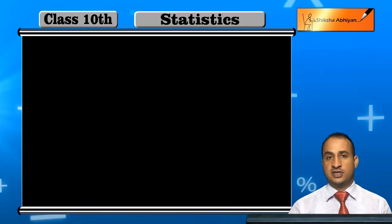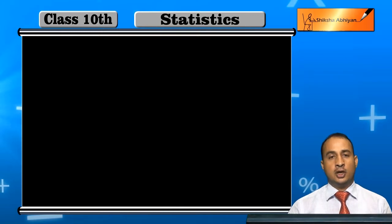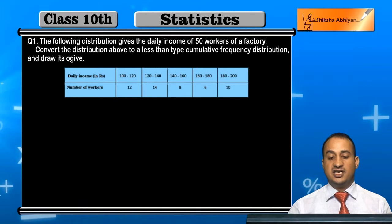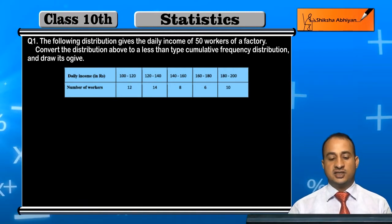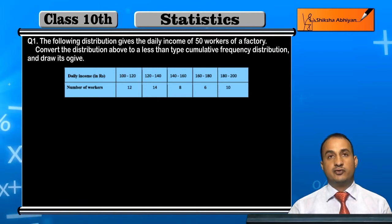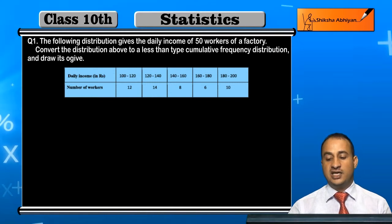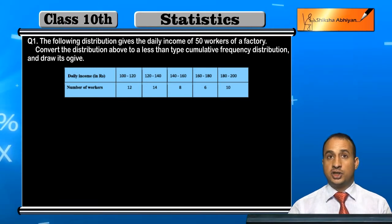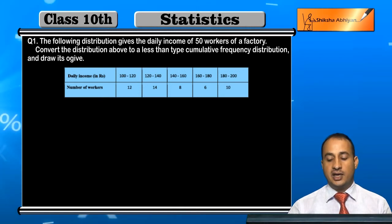The questions are about less than ogives. The first question is: the following distribution gives the daily income of 50 workers of a factory. The daily income ranges from 100 to 120, 120 to 140, and so on, with number of workers as frequencies: 12, 14, 8, 6, and 10. Convert the distribution above to a less than type cumulative frequency distribution.